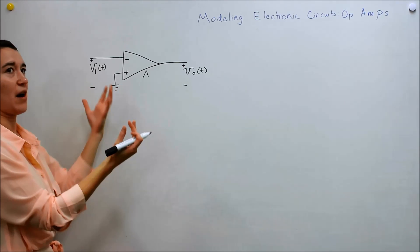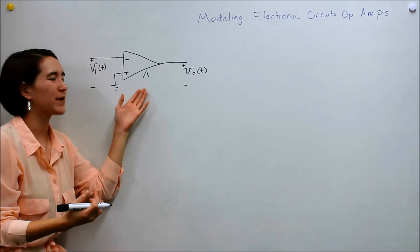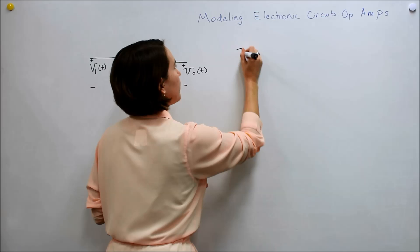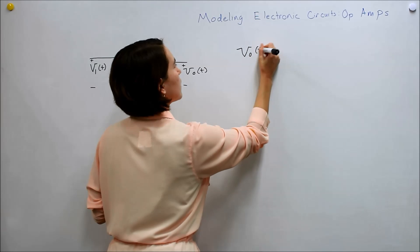Alright, so how does this operational amplifier work? Well, remember it has a gain. And so the basic equation for this is that our Vout of T is